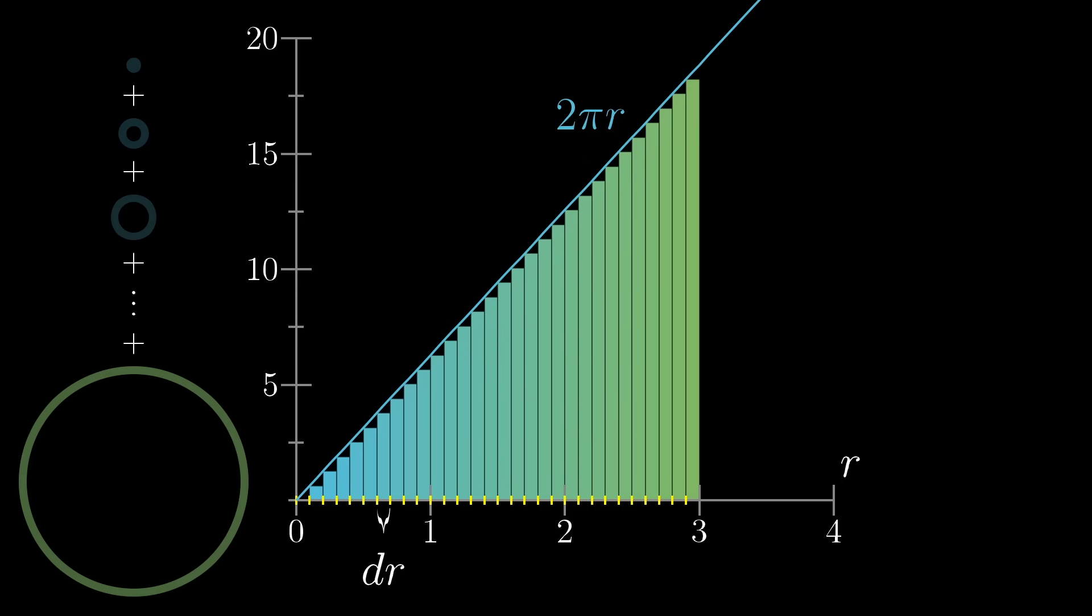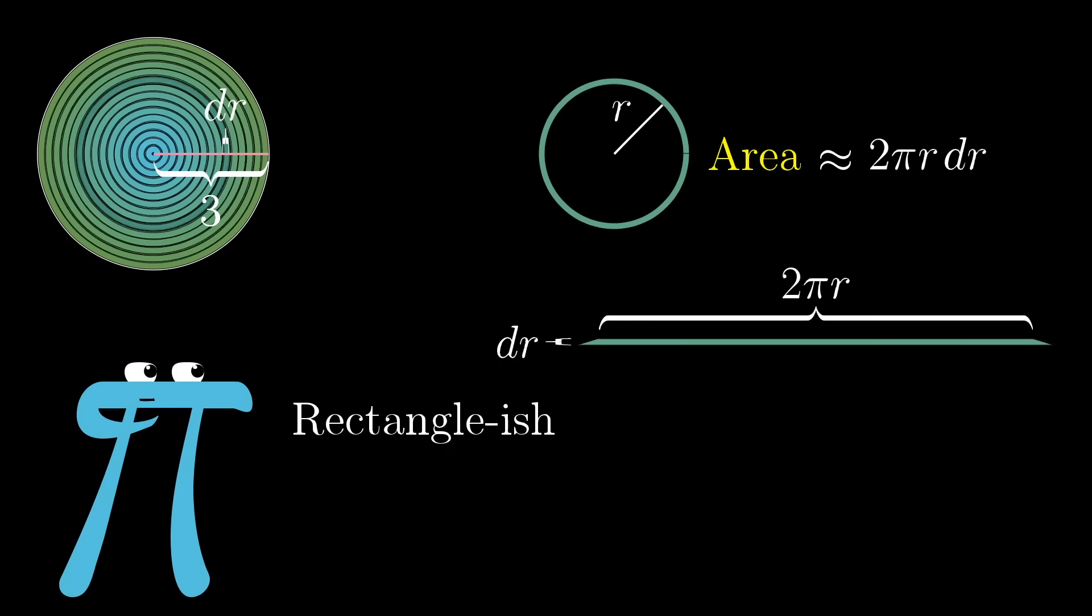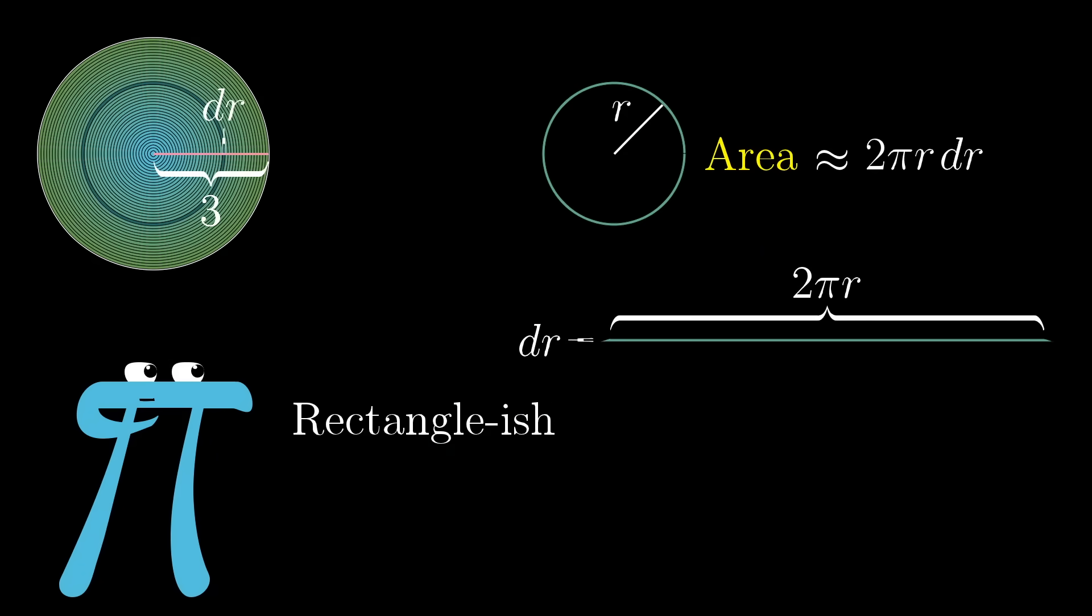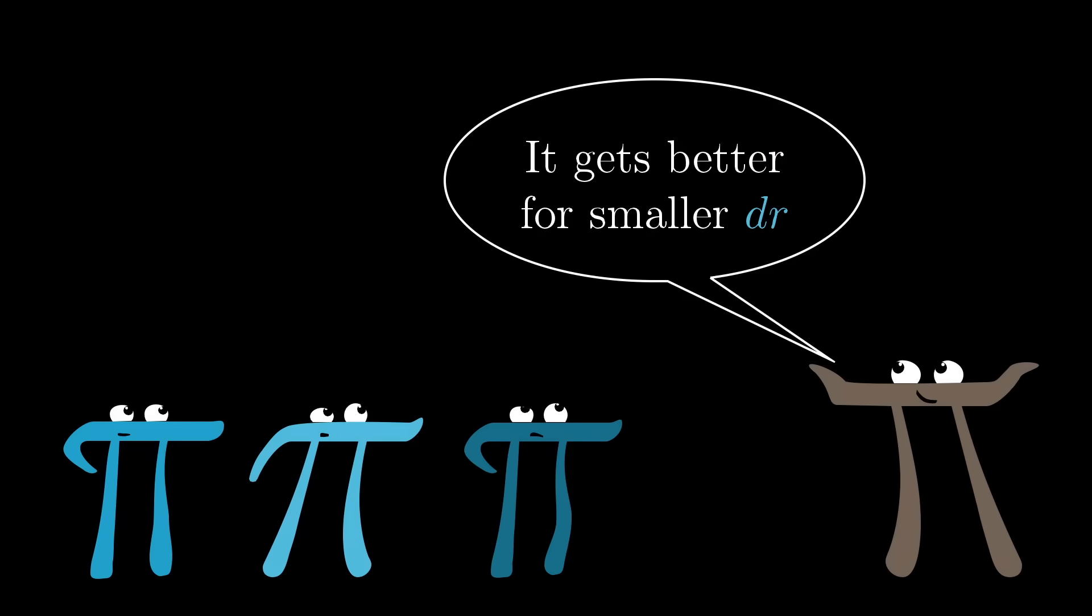Again, we're being approximate here. Each of these rectangles only approximates the area of the corresponding ring from the circle. But remember, that approximation, 2 pi r times dr, gets less and less wrong as the size of dr gets smaller and smaller.